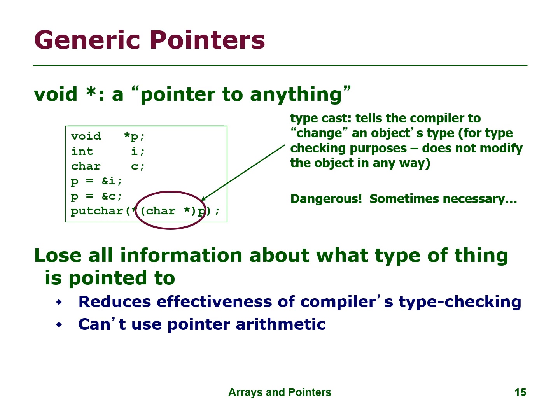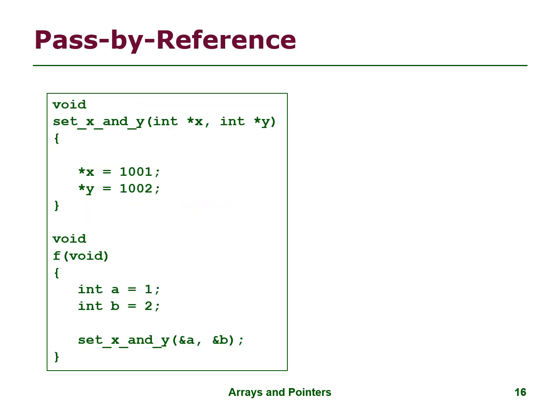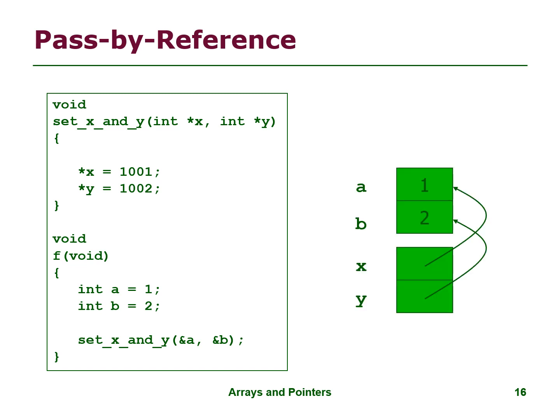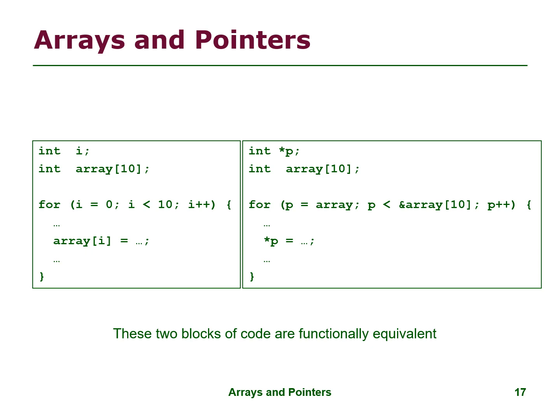Using void star loses all information about what type of thing is pointed to, which reduces the effectiveness of the compiler's type checking. You can't use void pointers for automatic pass by reference. Here is an example. Differences between arrays and pointers — here is an example. These two blocks of code are functionally equivalent.